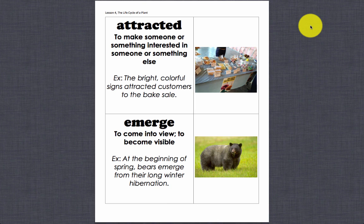Today we're looking at Lesson 4 Vocabulary for the Life Cycle of a Plant. The first word is attracted. This is to make someone or something interested in someone or something else. Example: the bright, colorful signs attracted customers to the bake sale.